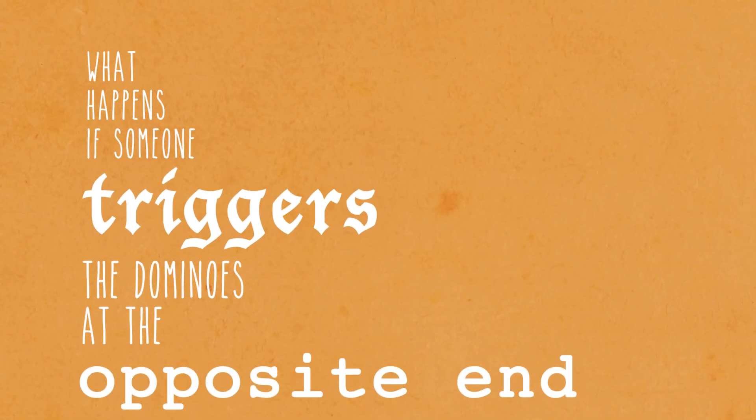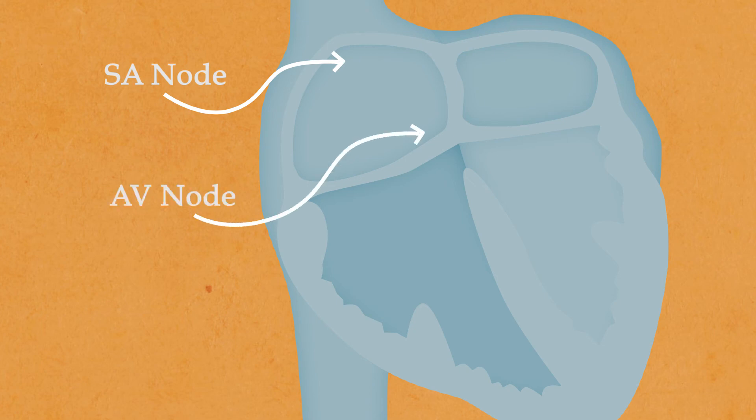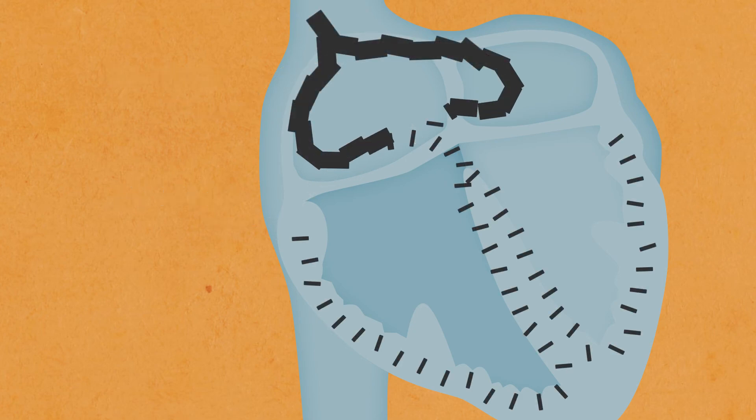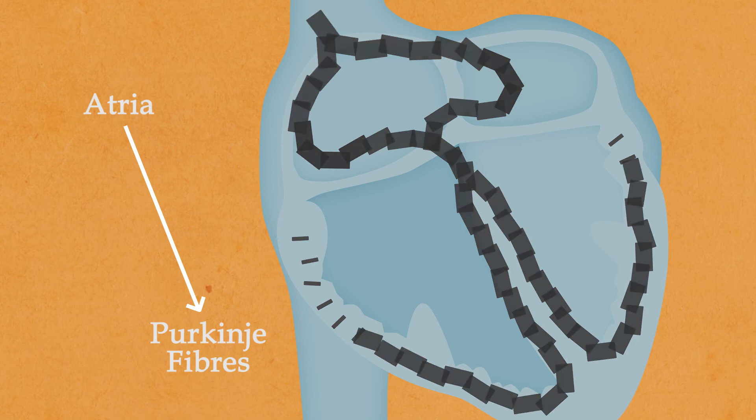What if someone triggers the dominoes at the opposite end of the path? Well, this is what happens when the SA node fails to fire, so the AV node is going to fire instead. Do you remember how we mentioned the dominoes can only collapse in one direction? Yeah, we said it goes from the atria to the Purkinje fibers. Right, but here's the exception.